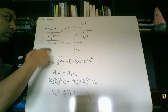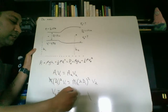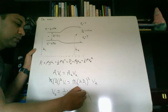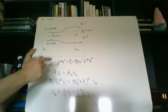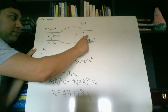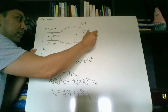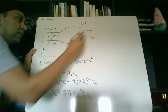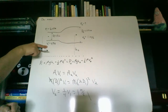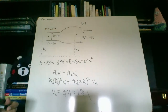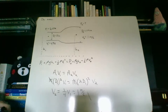We get V2 equaling one-fourth of V1. Since V1 equals 4 meters per second, one-fourth times 4 is just 1 meter per second. So 1 meter per second is the velocity that comes out. You move in with a fast velocity and come out with a slower velocity.